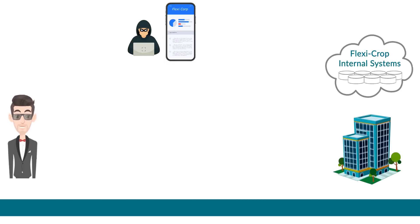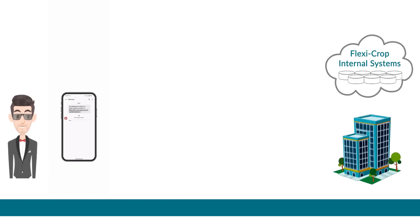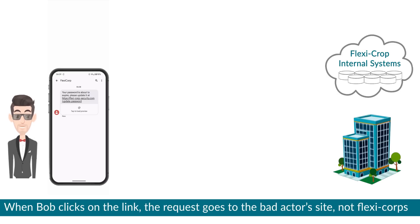Elsewhere in the world, a bad actor has just gained access to Flexi Corp's internal systems. How could this happen? Let's examine the last interaction. When Bob clicked on the link in the text message, while the link may look legitimate, it actually points to a site run by the bad actor.